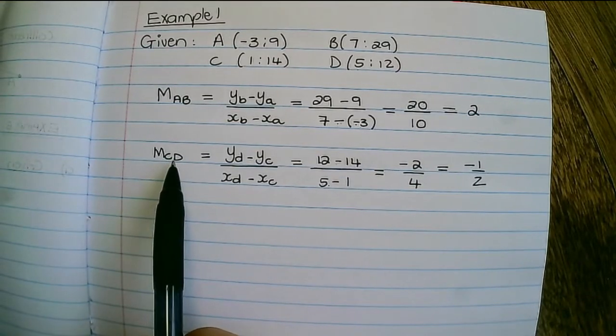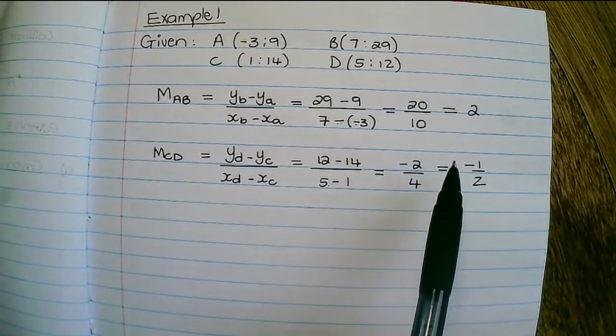And the line CD would be decreasing, going downwards, because its gradient is negative.